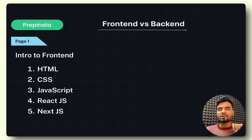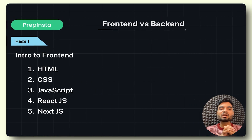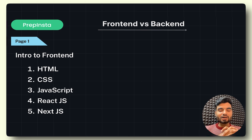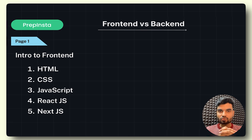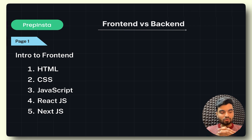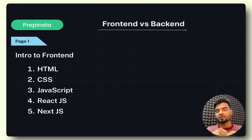Now let's talk about what technologies you need to learn to become a front-end developer. You must know HTML, CSS, and JavaScript, and after that you have a choice — either you learn React.js, Next.js, or some other technologies for advanced front-end development. These are a few examples of front-end technologies.